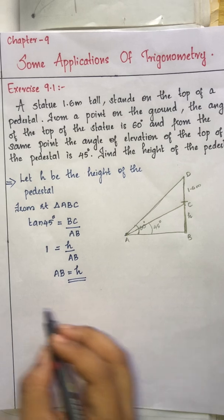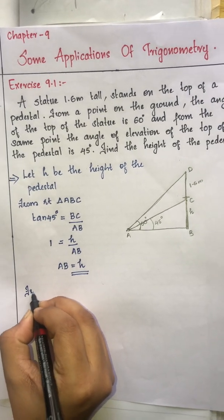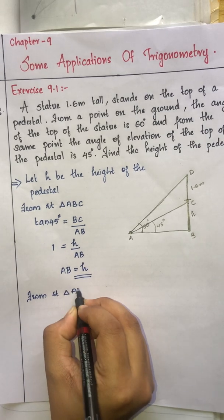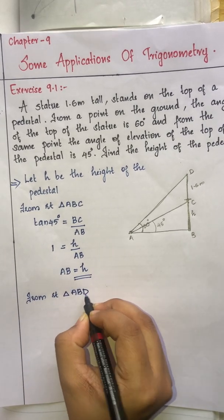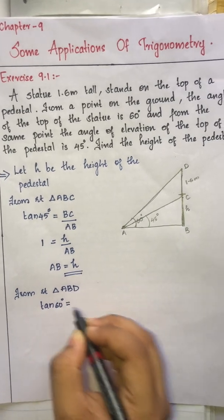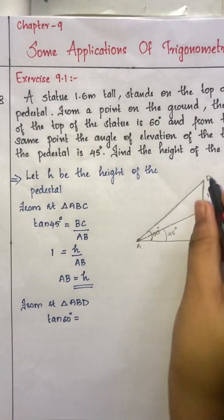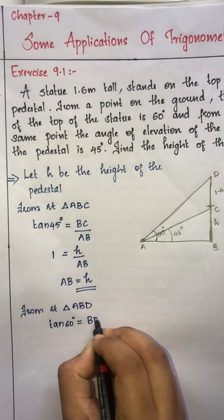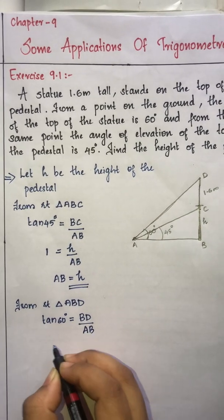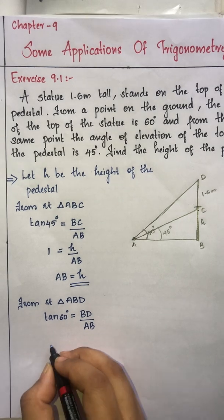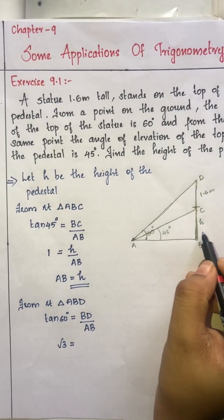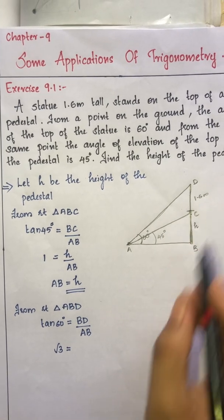Now let us consider the second right triangle ABD. Tan 60 equals the opposite side BD divided by the adjacent side AB. So root 3 equals BD divided by h plus 1.6 meters, where AB equals h.